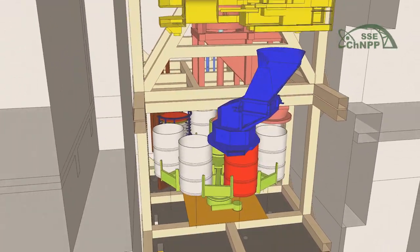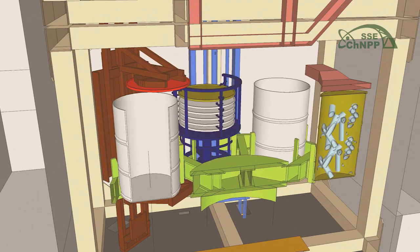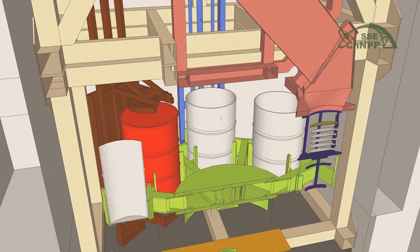A positioning mechanism enables sorting the fragments, moving drums and racks for lids and hoops to desired positions. Then a manipulator places lids on the filled drums.